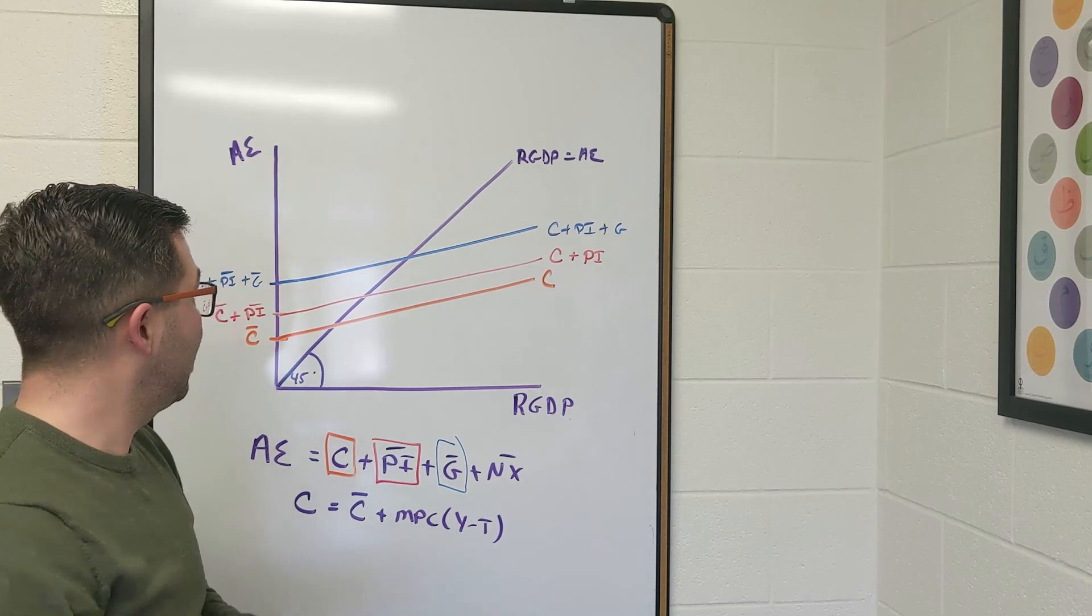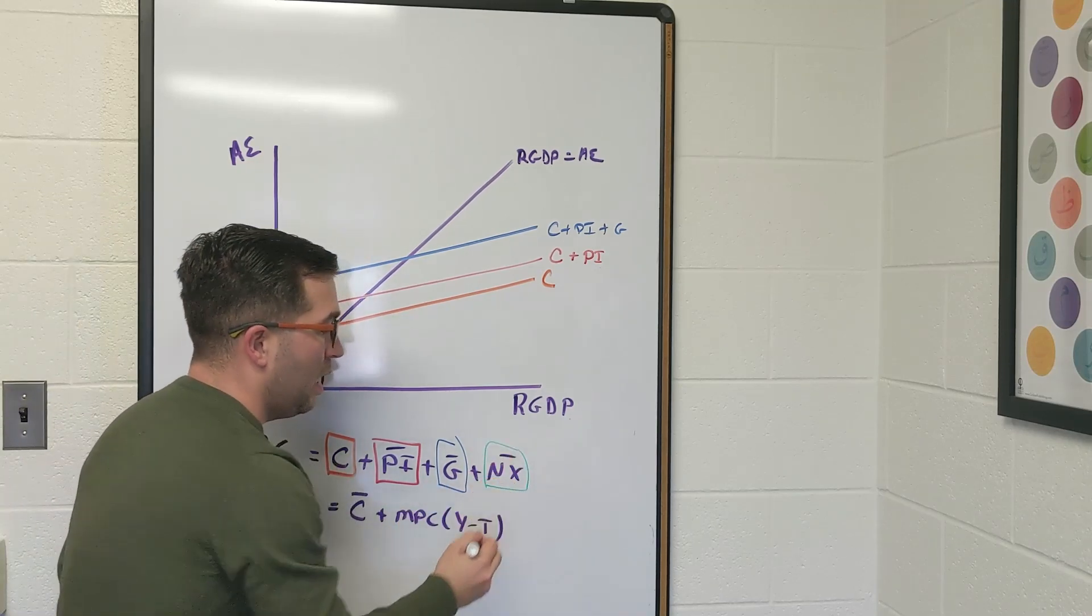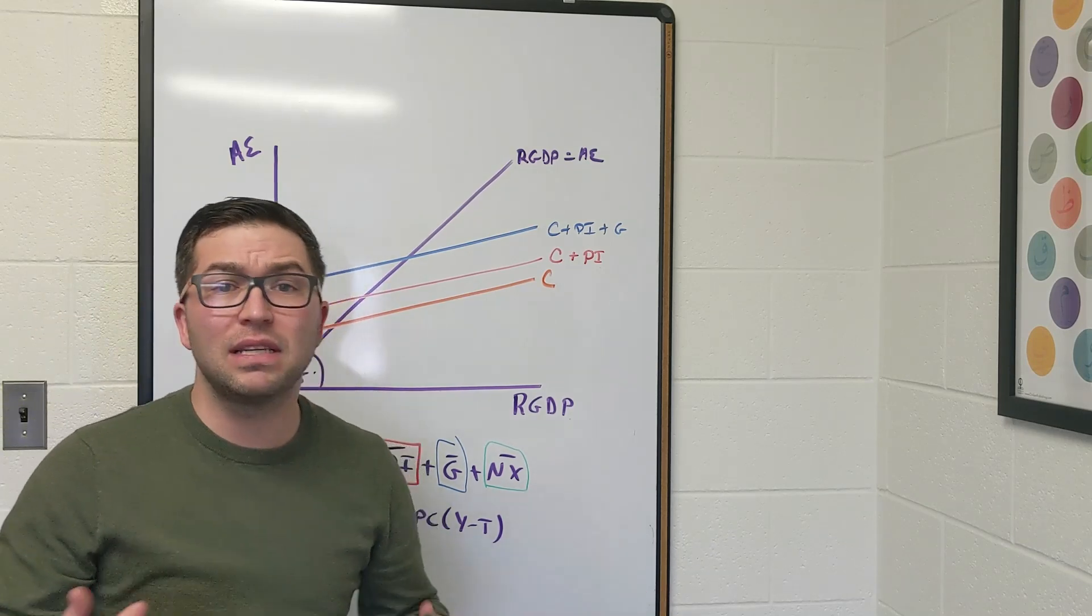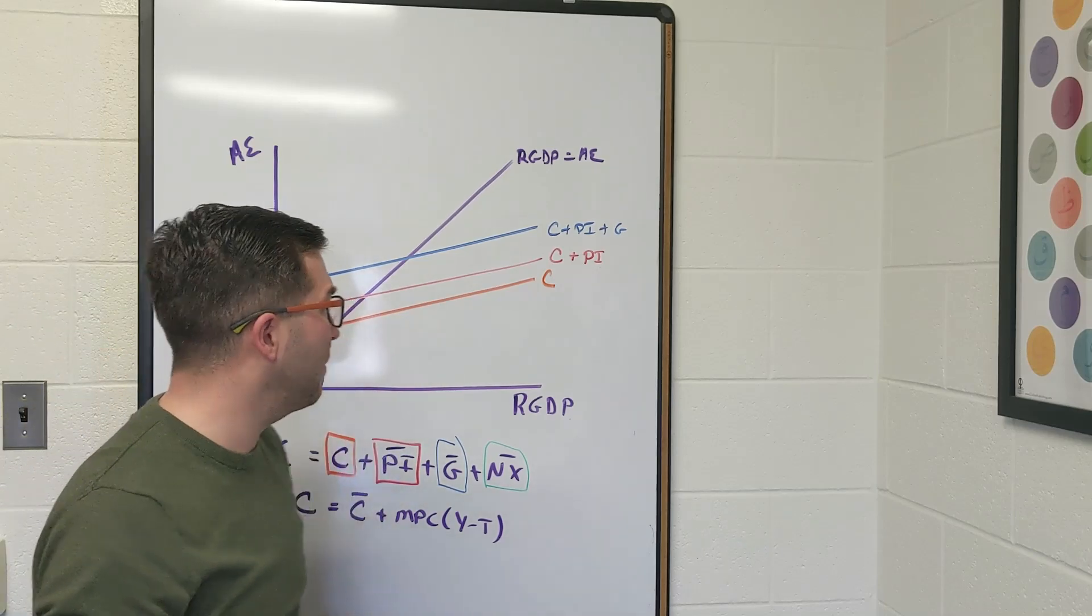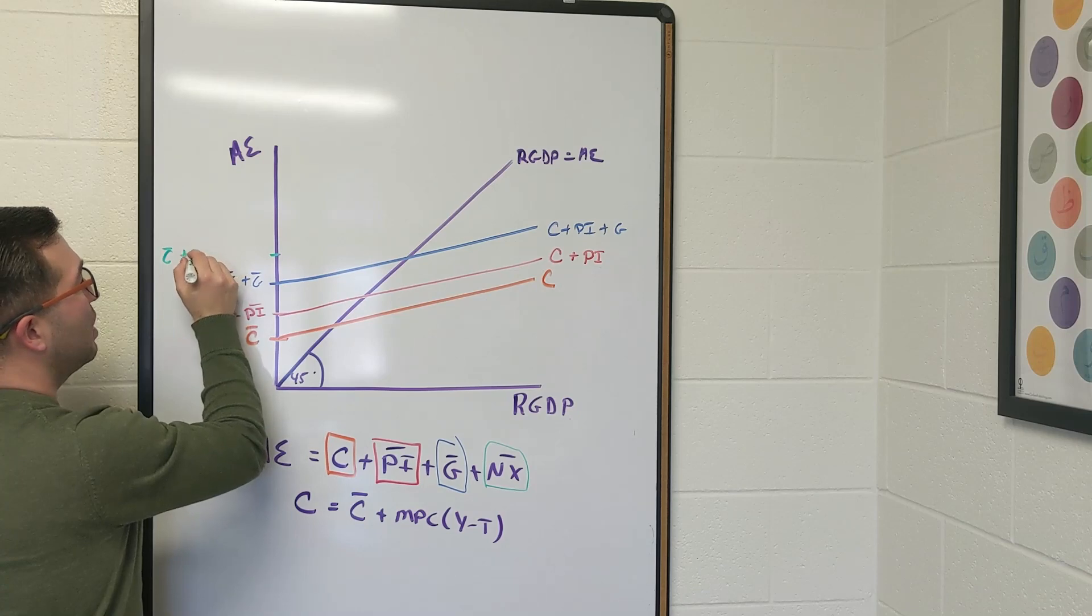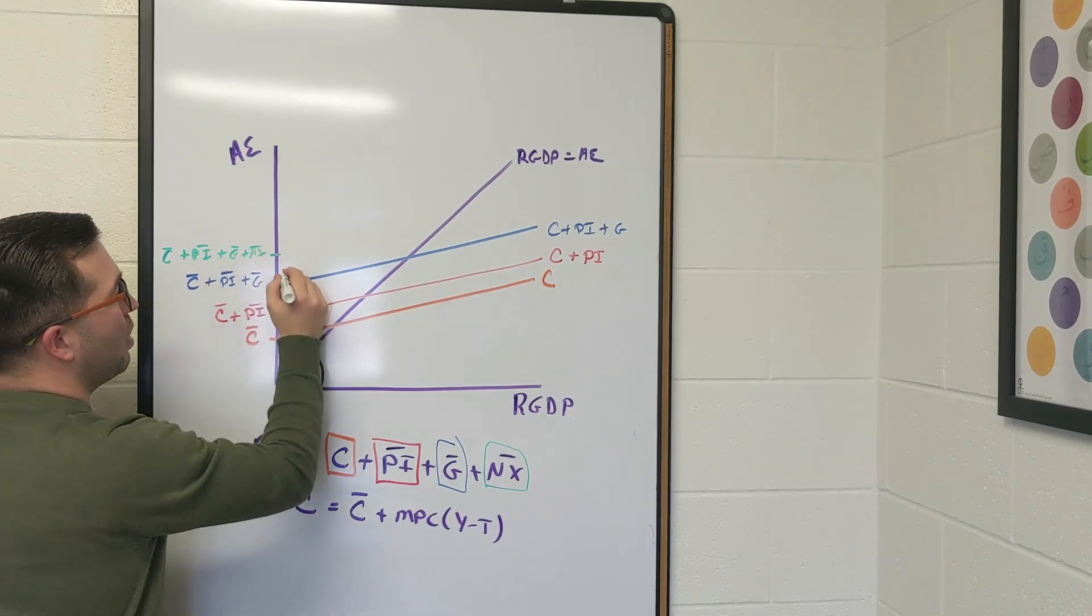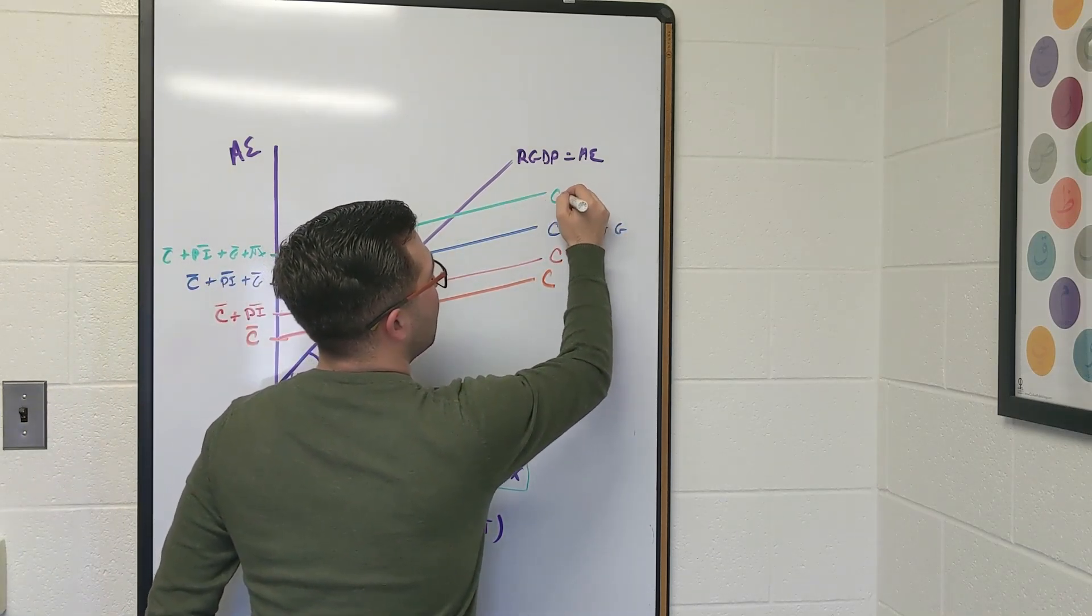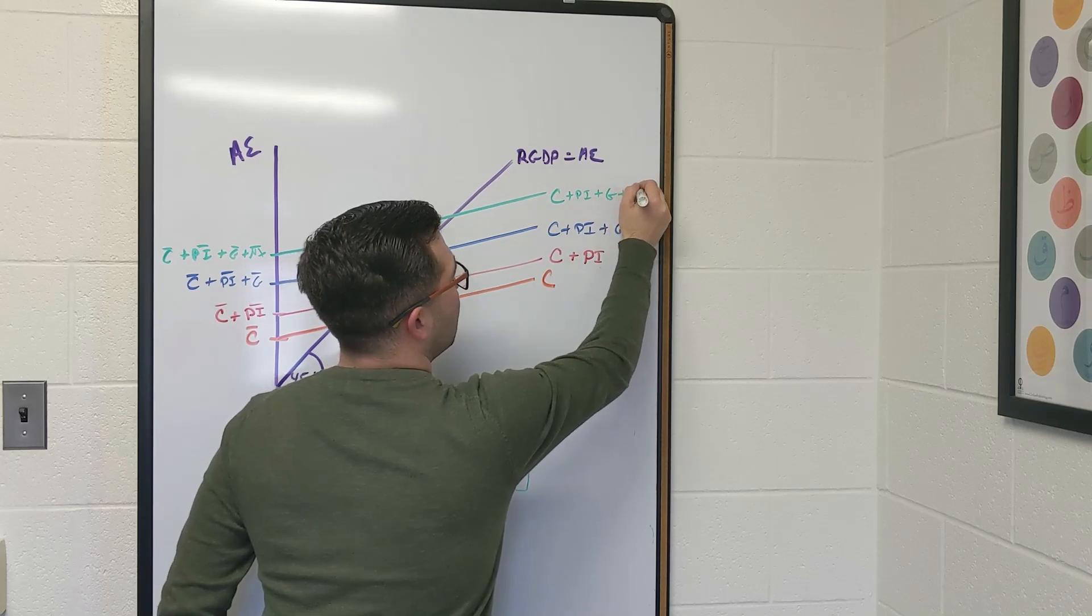Last but not least, we can add in net exports. Now, in the US, net exports is negative pretty much all the time, but it doesn't necessarily have to be. Let's just assume it's positive so we can keep the same trend. And so we have a line up here that's C bar plus PI bar plus G bar plus NX bar. And again, we see this parallel line where this is consumption plus planned investment plus government purchases plus net exports.